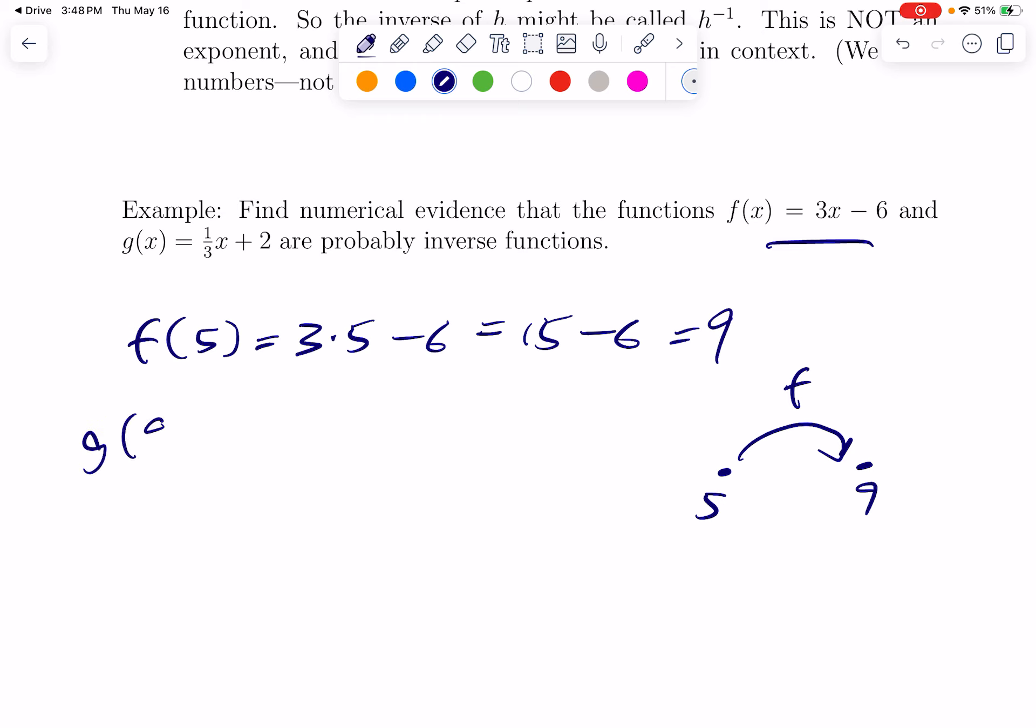So, F is a function that starts with 5 and turns it into 9. Well, what happens if I take G of 9? G of 9 would be 1 third of 9 plus 2, which is 3 plus 2, which is 5. The chances that this happened randomly with the very first number we picked is very small. Theoretically, maybe we just got very lucky. But this is evidence that we probably do have a pair of functions that are truly backwards versions of each other. Because the very first number we picked demonstrated this property. There's a good chance that it's always true.